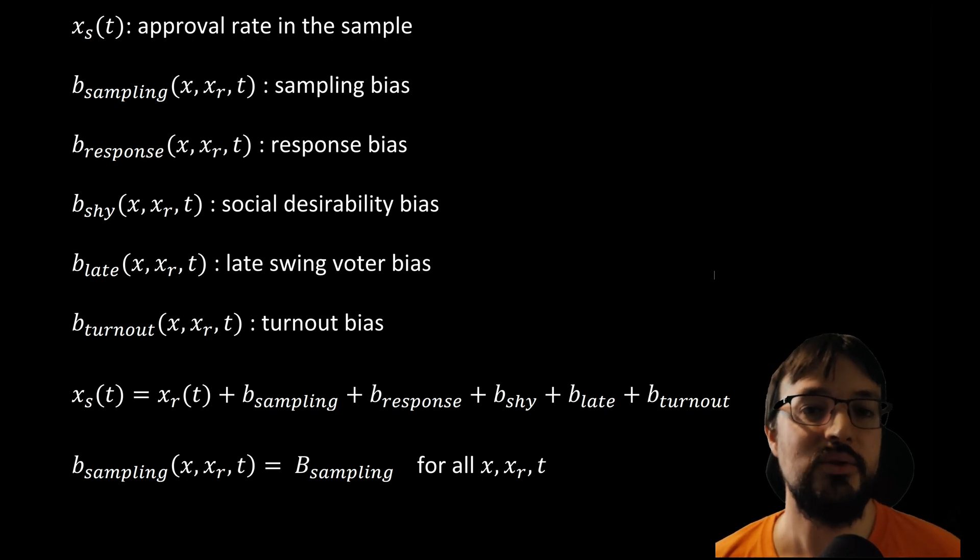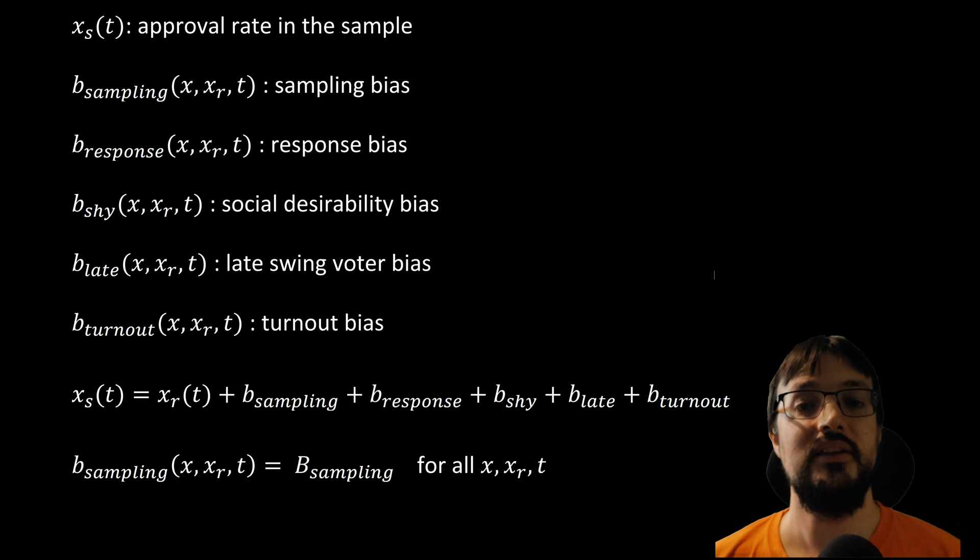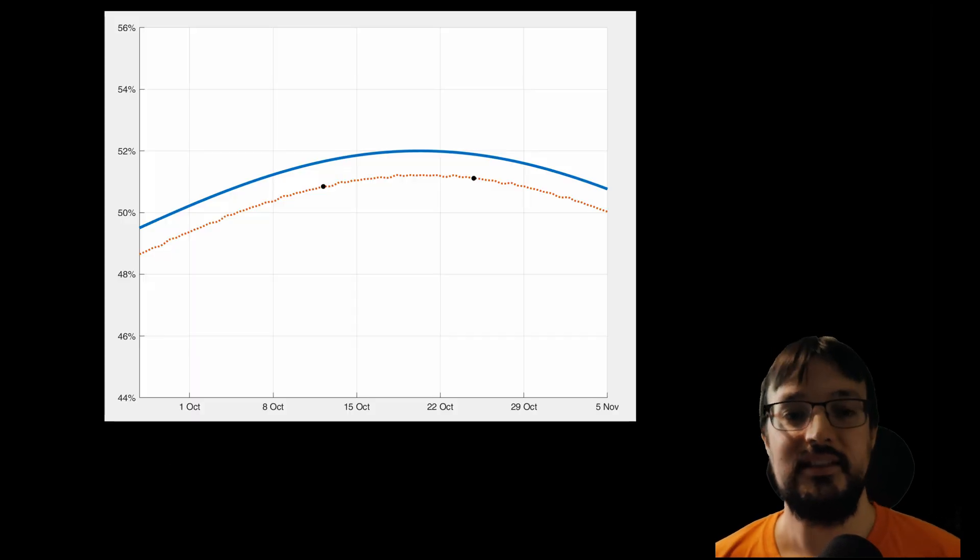Now, when a pollster conducts a survey to create an opinion poll result, they will try to minimize these biases as much as possible, by trying to select a good sample and trying to make corrections to counteract these biases. However, all these actions are effectively arbitrary. There is, of course, experience and methods behind these actions, but every pollster will apply their secret recipe. What is the result?